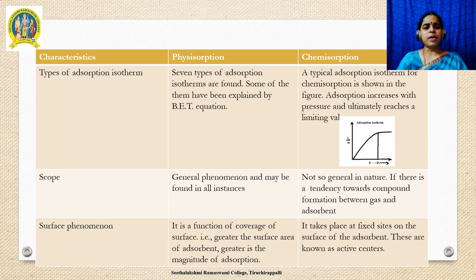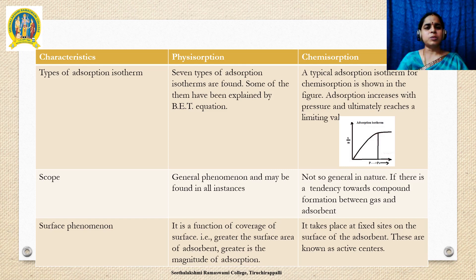There are seven types of physical adsorption isotherms reported so far in the case of physisorption; some of these are well explained by the BET equation. In chemisorption, a typical single-layer adsorption is represented where, as pressure increases, adsorption also increases gradually until it reaches a saturation point, after which even if pressure increases, adsorption doesn't change — it reaches a limiting value.